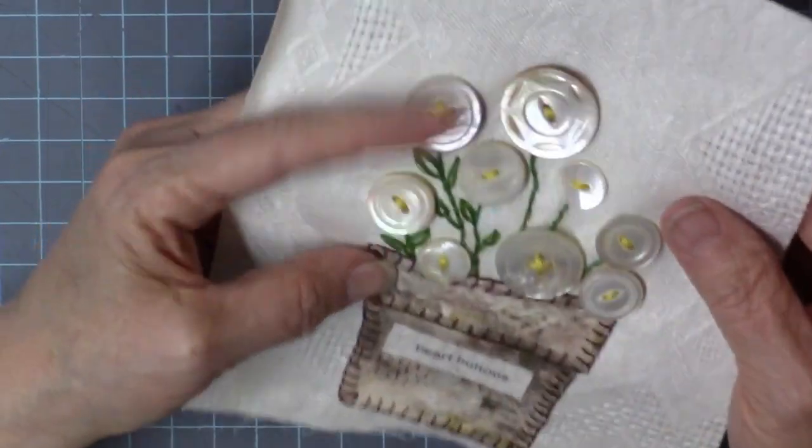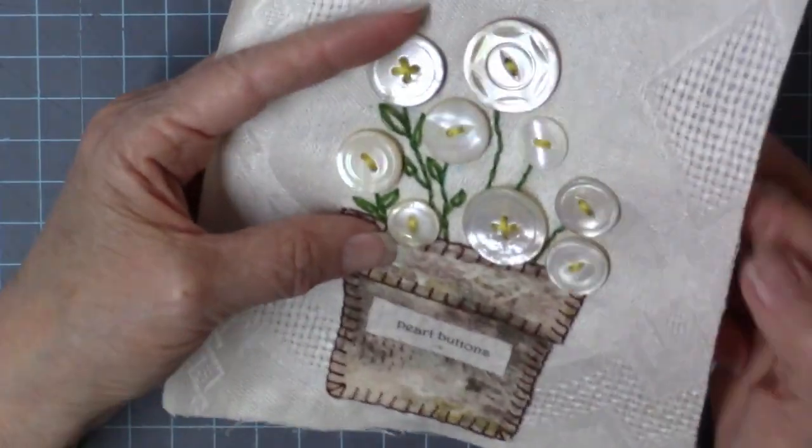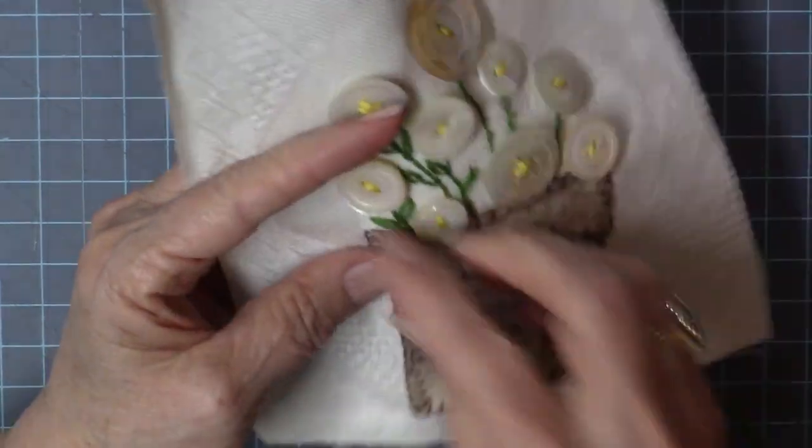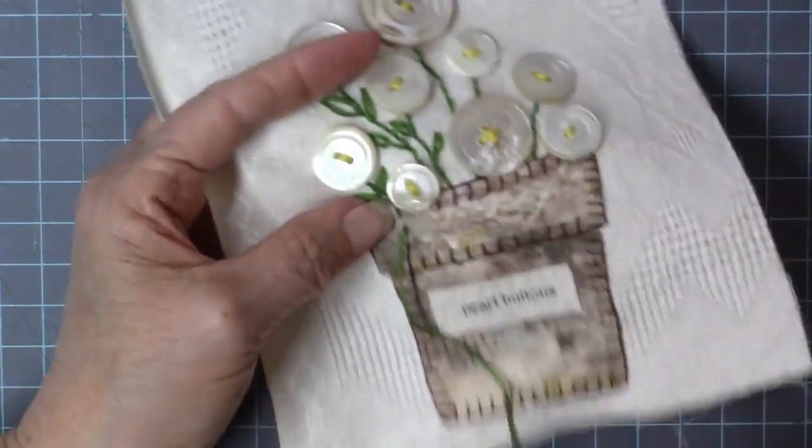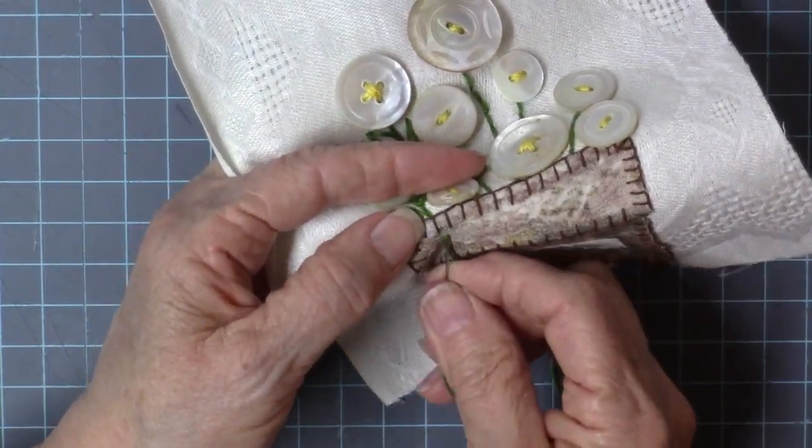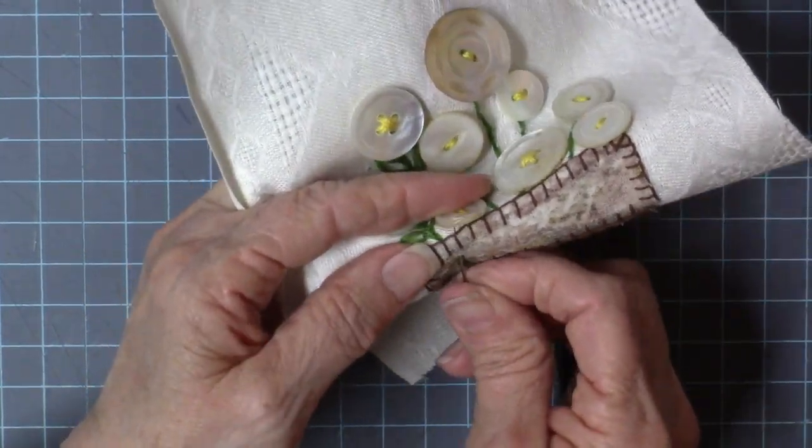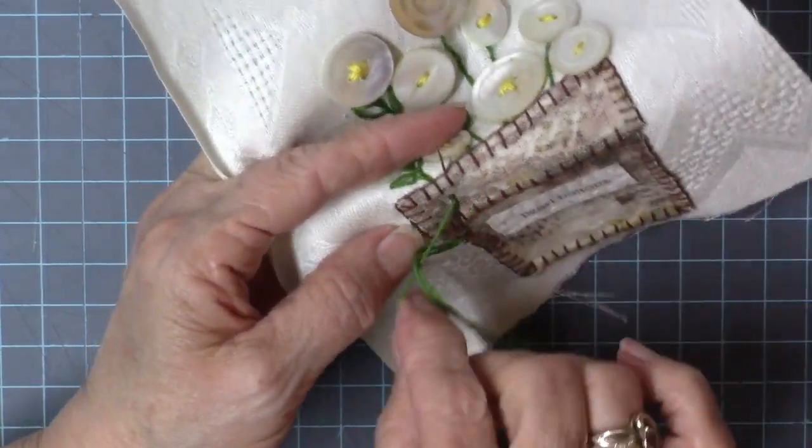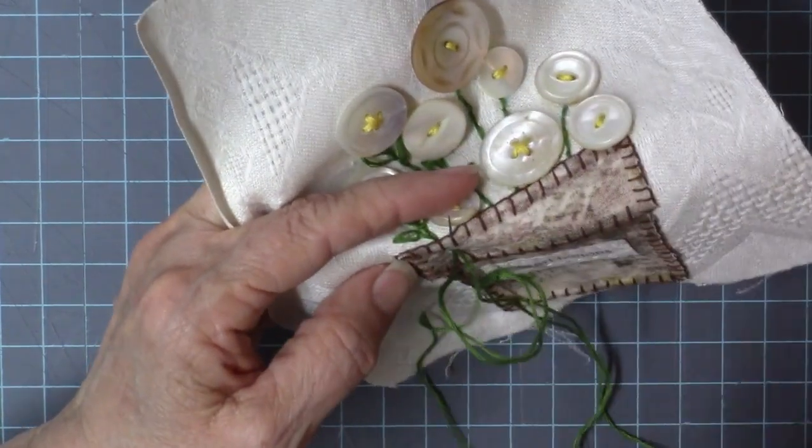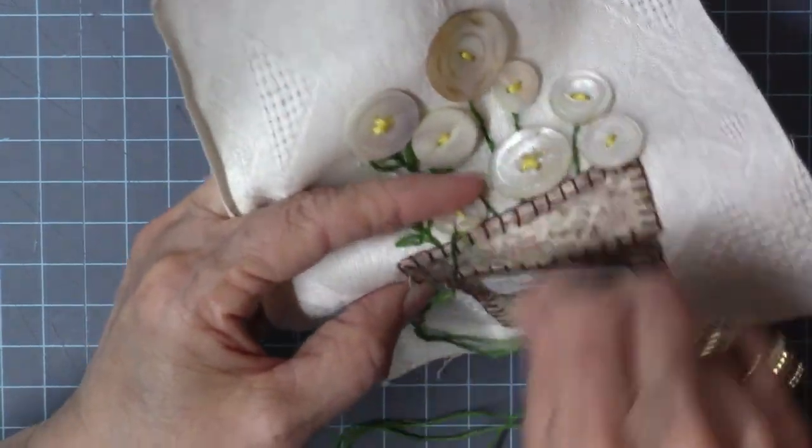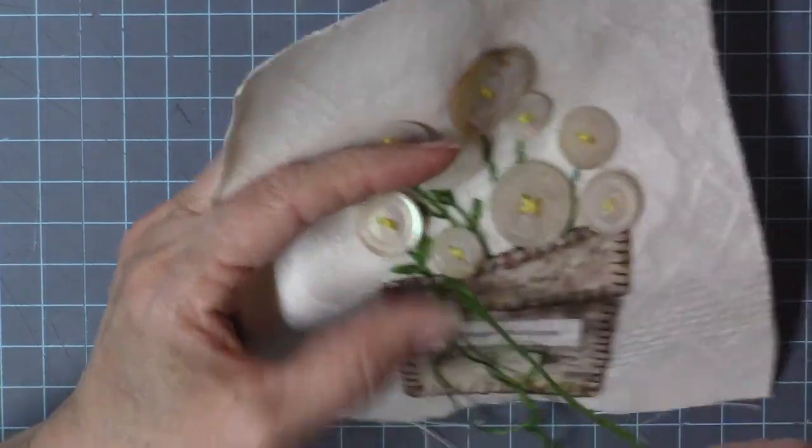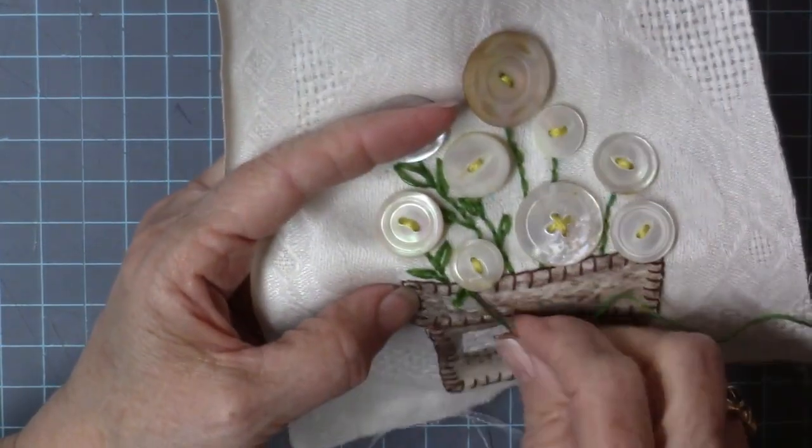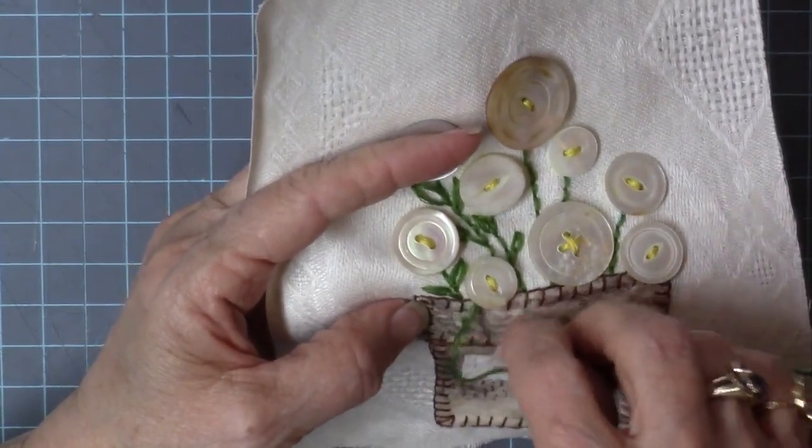And one more thing while I'm still on camera. I want to give this one a little leaf. So we're going to kind of put this up under where that button is. Because not all the leaves are on the inside of the flower pot.